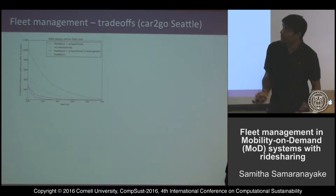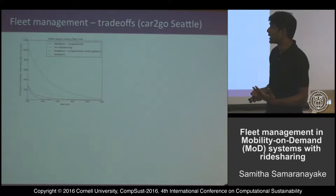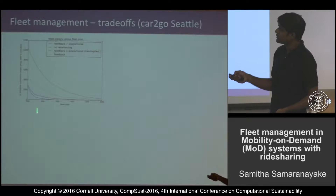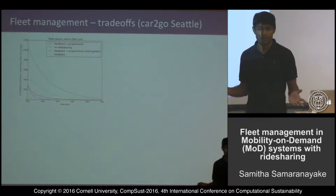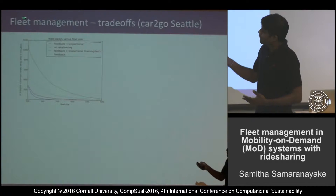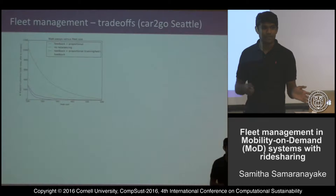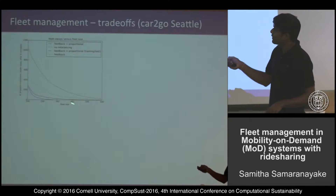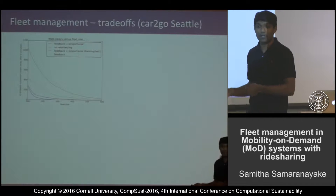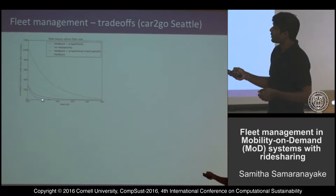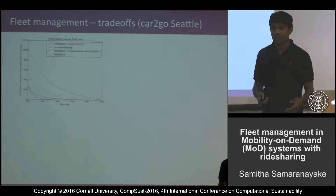We applied this approach to real data from Car2Go, testing four different rebalancing strategies and examining what insights a fleet operator could gain. The x-axis is fleet size and the y-axis is the number of dropped customers — defined as customers who waited more than six minutes and left. The green curve is no rebalancing at all. Another curve corresponds to feedback rebalancing, where when a demand appears a car moves toward it. A third strategy adds proportional rebalancing using a forecast of future demand — in this case simply using demand from the previous week at the same time.